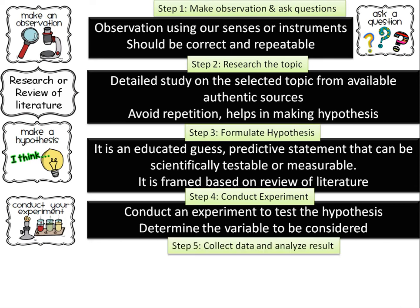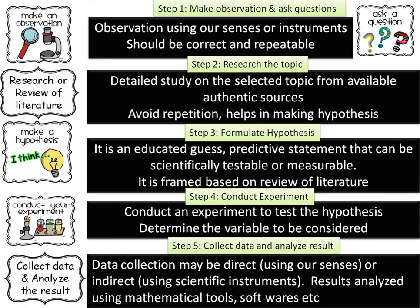Step five is collect data and analyze data. Data collection, as in the case of observation, may be direct using our senses, or indirect using some instruments. Results are analyzed for their authenticity by using mathematical tools, softwares, etc., to find out the significance of the result. We also avoid errors while collecting data and during analysis using different tools.